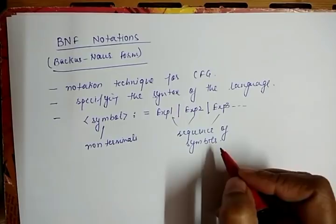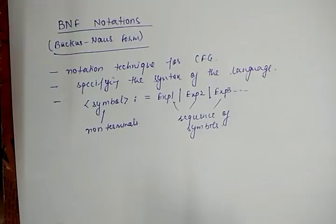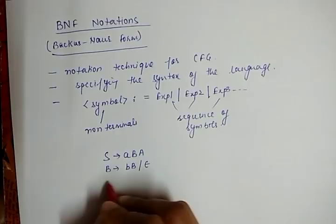The symbol can be a combination of terminal as well as non-terminal. For example, in our previous video we took some grammar examples: S derives ABA, B derives BB or epsilon, and A derives A or B.